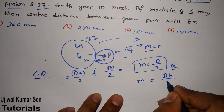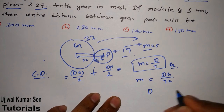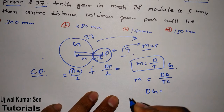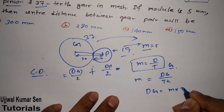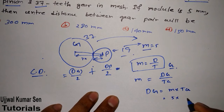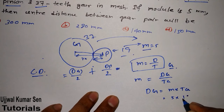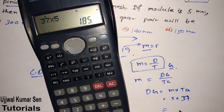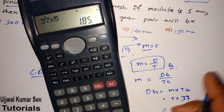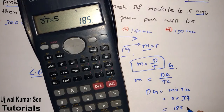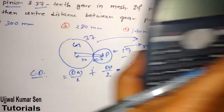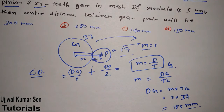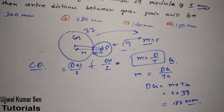For the gear: diameter of gear = module × number of teeth = 5 × 37 = 185 mm. Now finding the pinion diameter using the same formula: diameter of pinion = module × number of teeth of pinion = 5 × 19 = 95 mm.